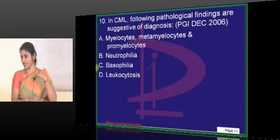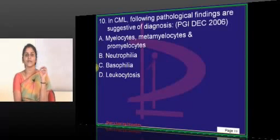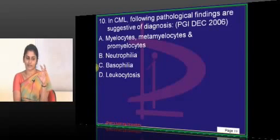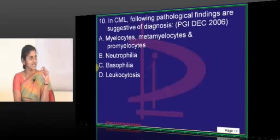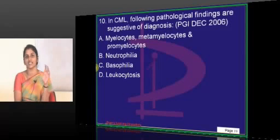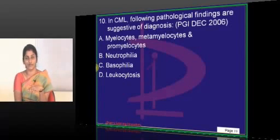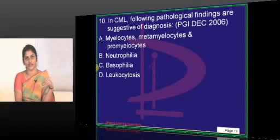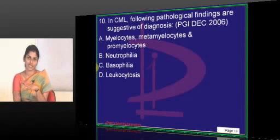We have three phases of CML. The chronic phase is where patients are commonly diagnosed. This is followed by the accelerated phase, and then blast crisis. It does not mean that in every case the chronic phase is followed by the accelerated phase — in some patients, they will suddenly jump from chronic phase to blast crisis.